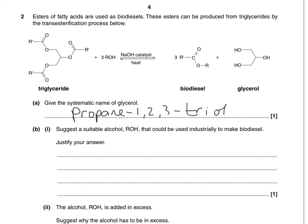Part BI asks you to suggest a suitable alcohol — so what could ROH be? When I teach this to my students, I always say either methanol or ethanol, because they're both sustainable or renewable alcohols. For example, ethanol can be made from the fermentation of sugars, which you can obviously grow.